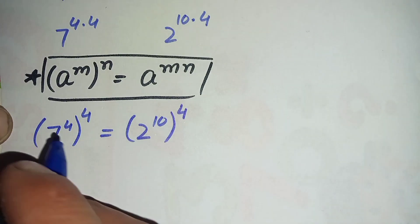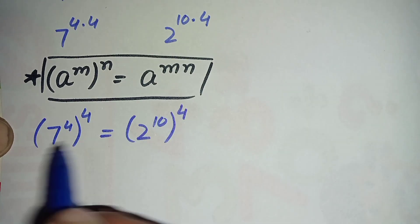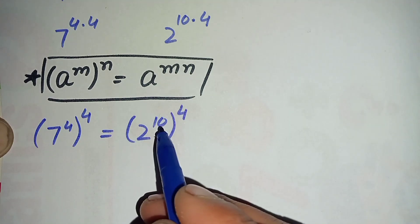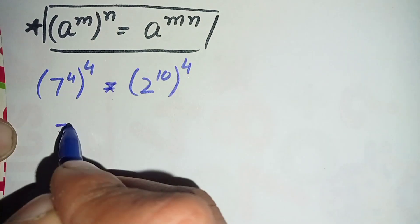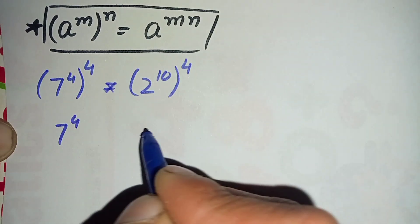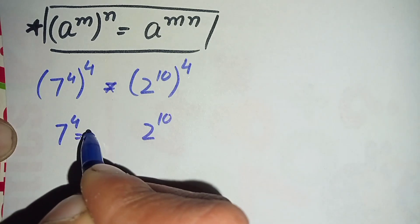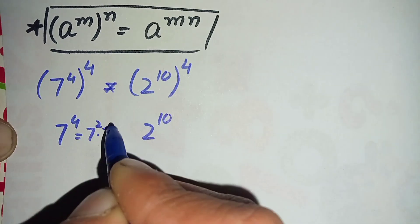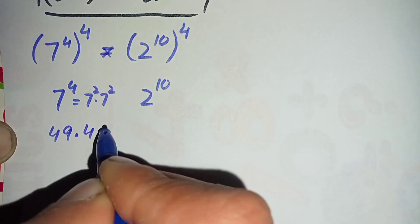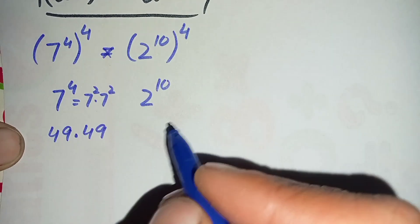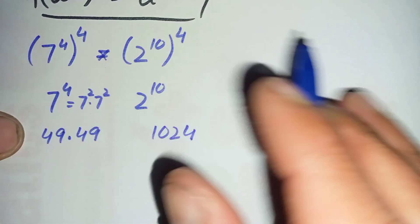Now the powers are the same, so we compare the bases: 7 raised to power 4 versus 2 raised to power 10. We can write 7 raised to power 4 as 7 squared times 7 squared, which is 49 times 49. And 2 raised to power 10 is the well-known number 1024. We will now multiply 49 times 49.